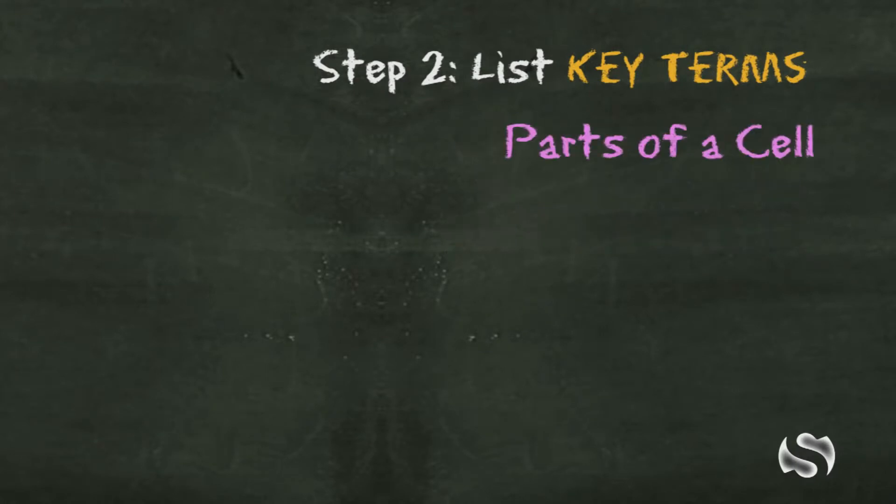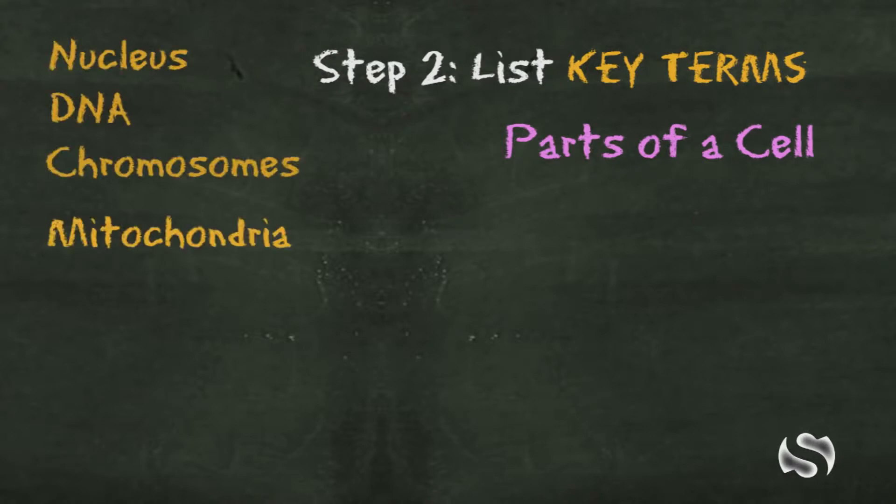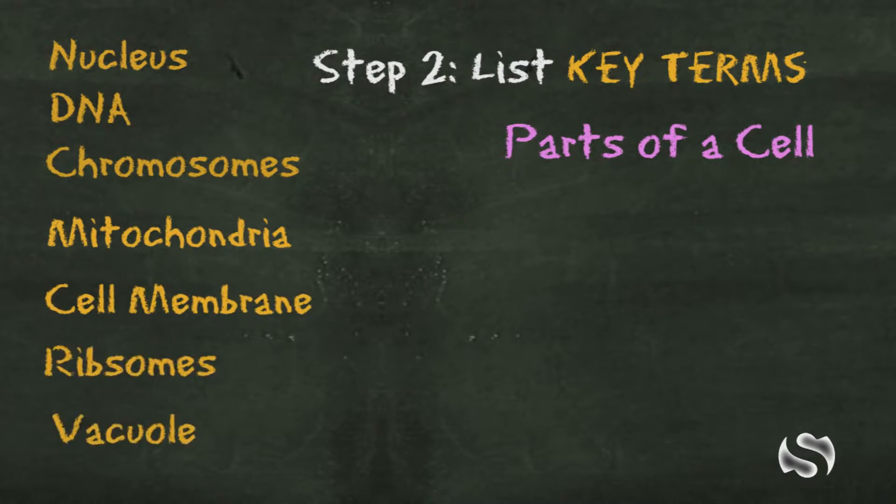So for example, with the parts of a cell, you might have the nucleus, DNA, chromosomes, mitochondria, cell membrane, ribosomes, vacuole. Things like that would be really important terms that you would see on a test covering the parts of a cell.